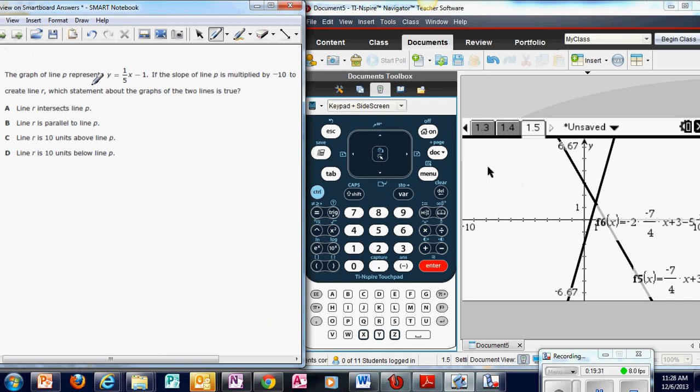So we have the graph of line P is represented by the equation y equals one-fifth x minus one. If the slope of P is multiplied by negative 10. So the slope of P is multiplied by negative 10 to create line R, which is true about the graph of the two lines. So first of all, what is the slope? I hope that you know that one-fifth is the slope. And negative one is the y-intercept. So are the lines gonna, is their steepness gonna be affected, or are we gonna shift the lines up or down vertically? Well, slope affects steepness. And B, when you change that, that is a vertical shift up or down. And we said we're multiplying the slope. So anything we're talking about up and down is not gonna be true.